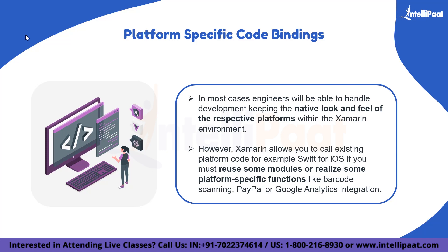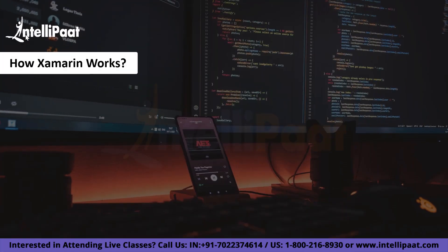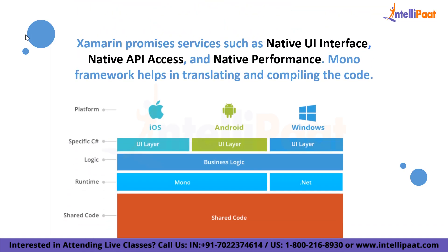Moving forward, let's understand exactly how Xamarin works. Xamarin allows developers to build native applications for Android, iOS, and Windows Phone with a single codebase — C# — and a single IDE, Visual Studio. Thus, a developer can build native mobile applications without knowing Java, Kotlin, Objective-C, or Swift. Xamarin offers three promises: native UI interface, native API access, and native performance. It allows you to create native UI on each platform while writing business logic in C# shared across all platforms, with up to 80% of application code shareable.